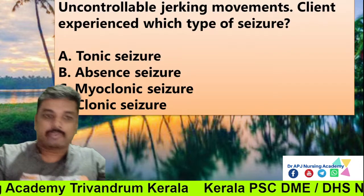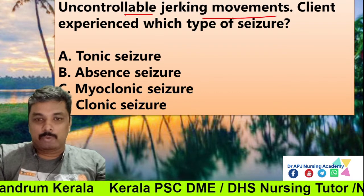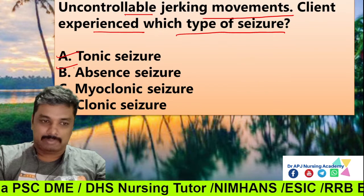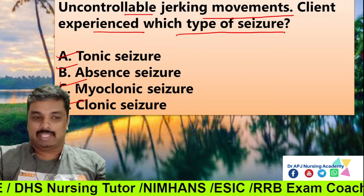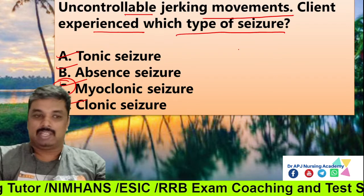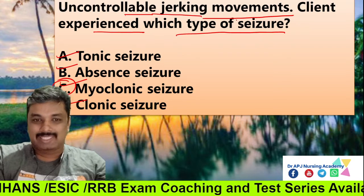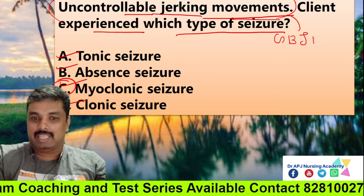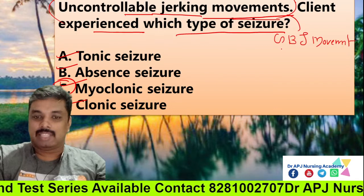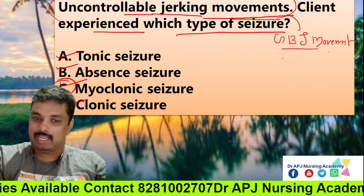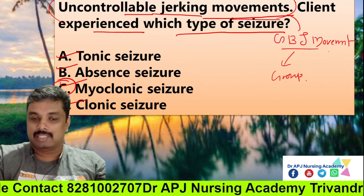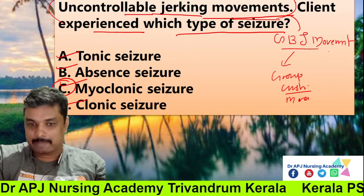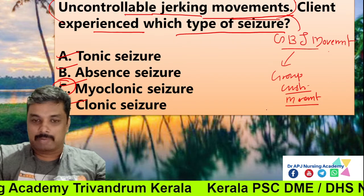Next question: Uncontrolled jerky movements — what does the client experience? What type of seizure? Options: tonic seizure, absent seizure, myoclonic seizure, clonic seizure. The correct answer is myoclonic seizure. Myoclonic seizure involves uncontrollable jerky movements — generalized body jerky movements, involving a group of muscles with rapid, repetitive muscle movements.